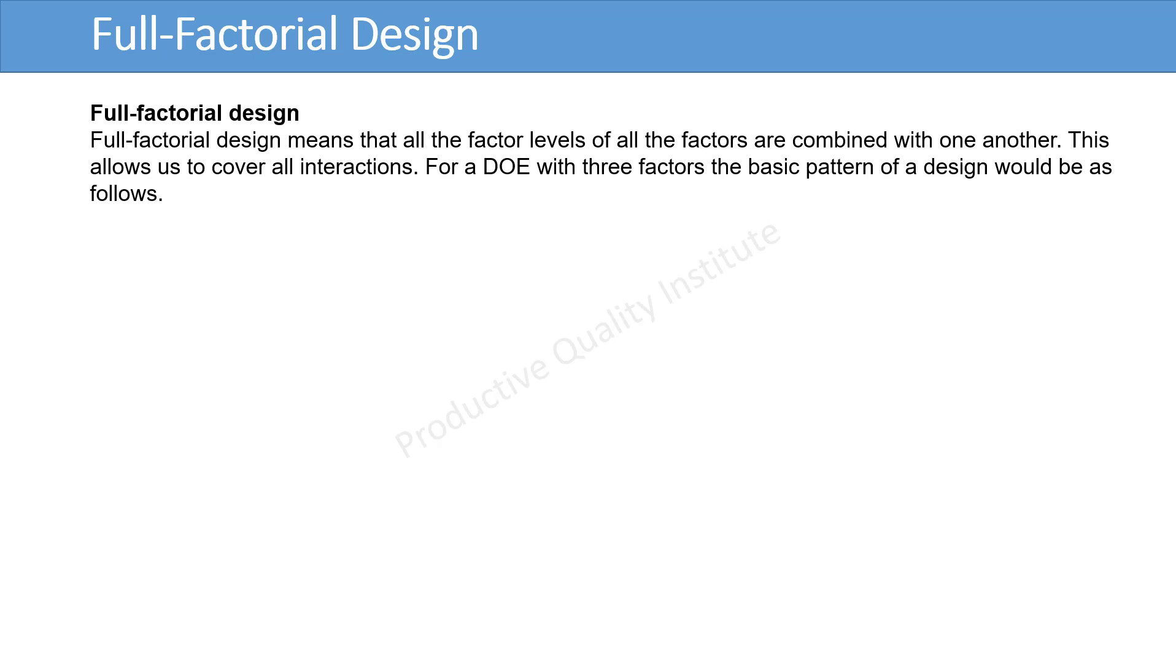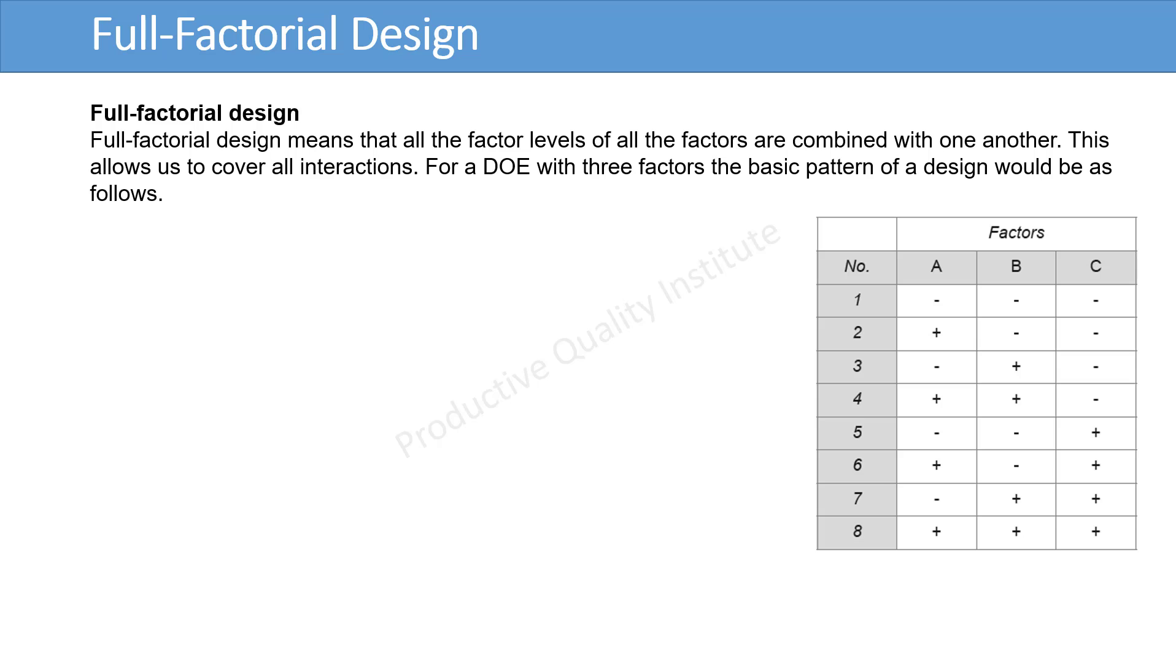Full factorial design means that all the factor levels of all the factors are combined with one another. This allows us to cover all interactions. For a DOE with 3 factors A, B, and C, the basic pattern of a design would be as follows. 2 to the power 3 is equal to 8 experiments as shown in the table.